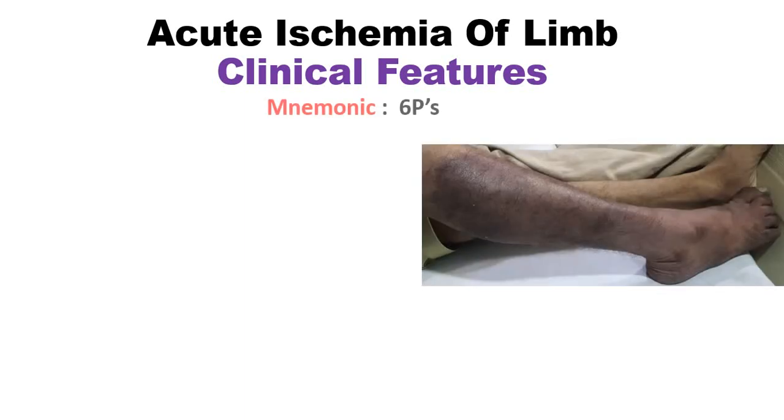Hi everyone. In this video we will discuss the mnemonic for acute ischemia of the limb, its signs and symptoms. The mnemonic is six P's.